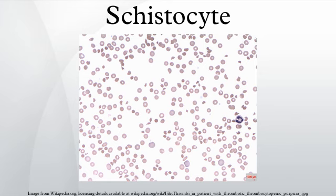Excessive schistocytes present in blood can be a sign of microangiopathic hemolytic anemia, where the most common cause is aortic stenosis.